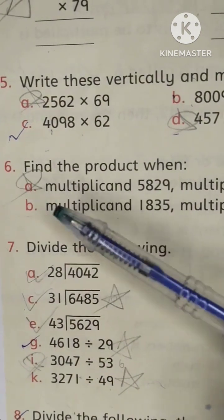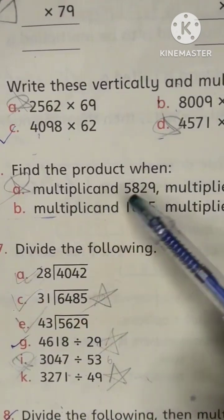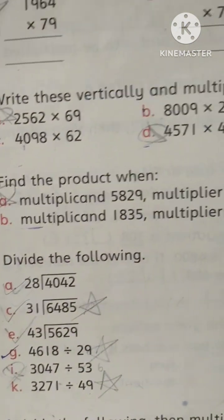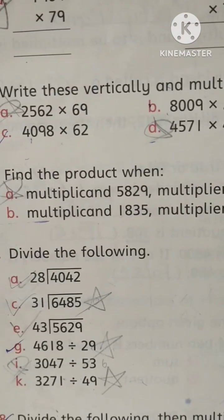Find the product when multiplicand is this and multiplier is this. Let's solve this.